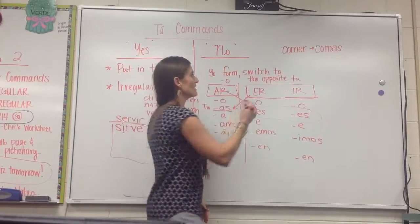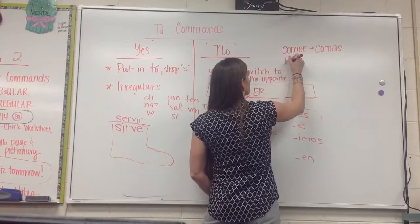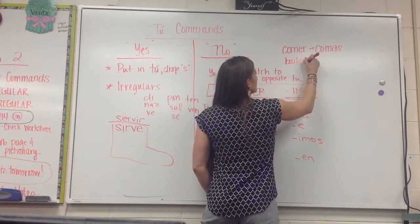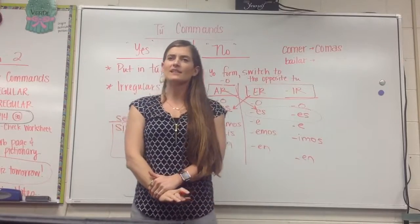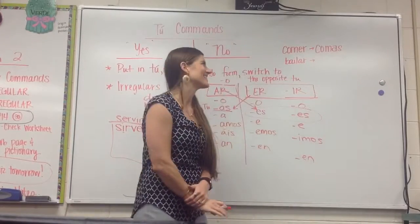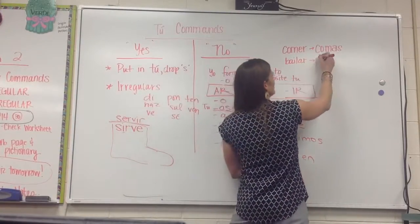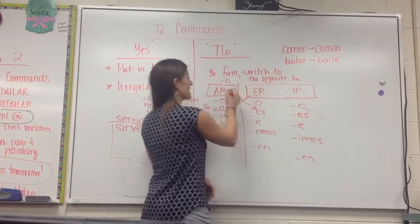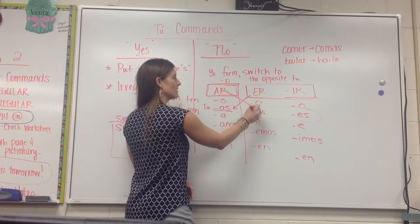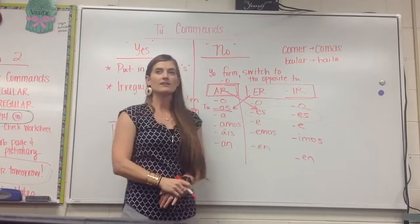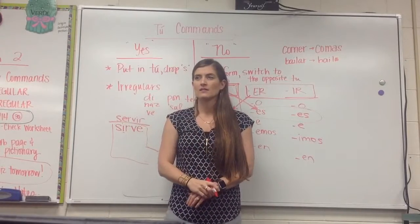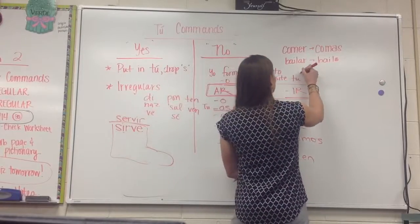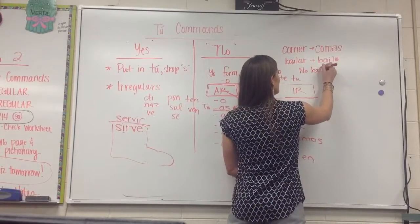But if I want to say, don't dance, if I want to say, don't dance in class, how do I say that? Bailar changes to bailo, get rid of my o, bailar is an AR verb, so it switches to what ending? Es. Es, so how do I say, don't dance? No bailes. No bailes. No bailes.